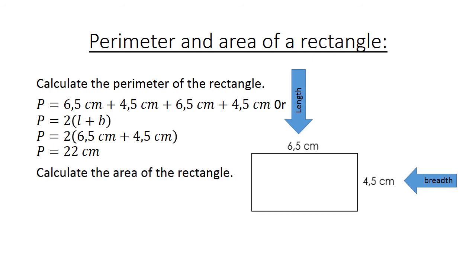Calculate the area of a rectangle. Area is length times breadth. Equals 6.5 cm times 4.5 cm equals 29.25 cm square.